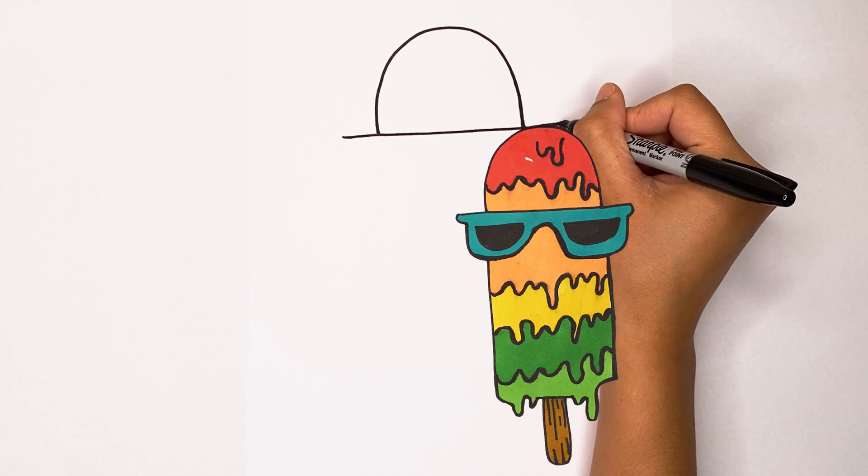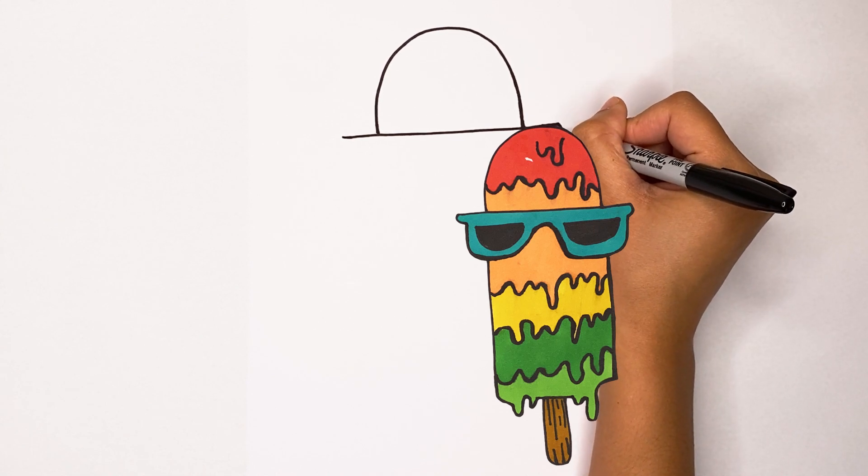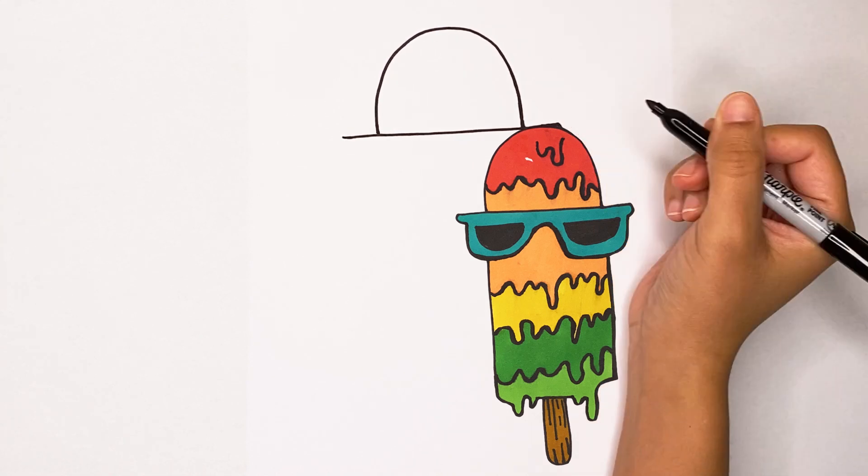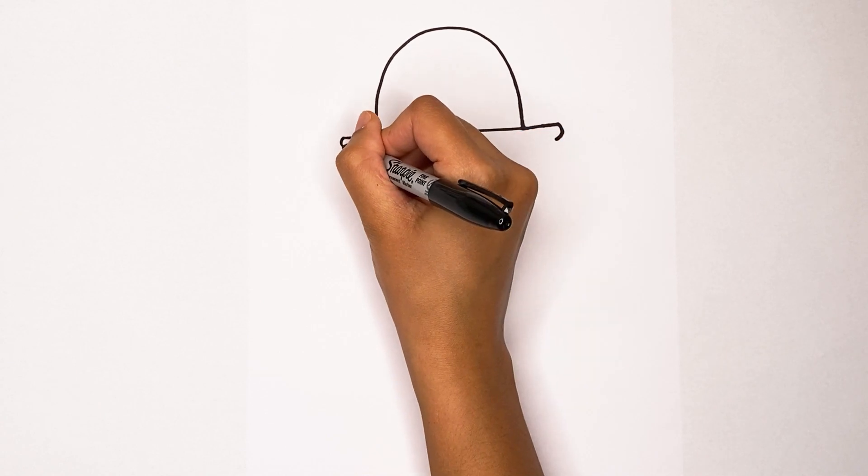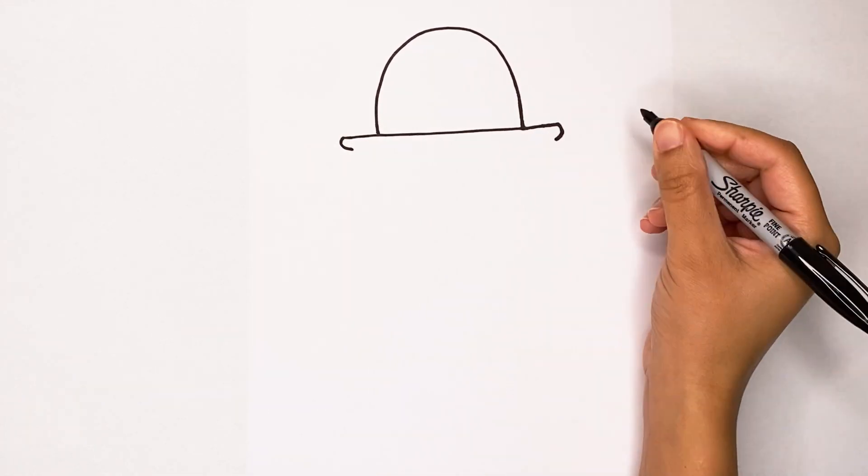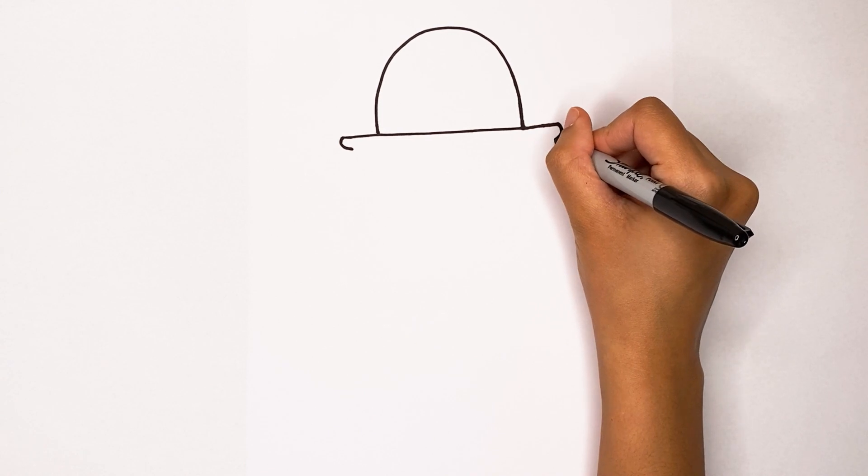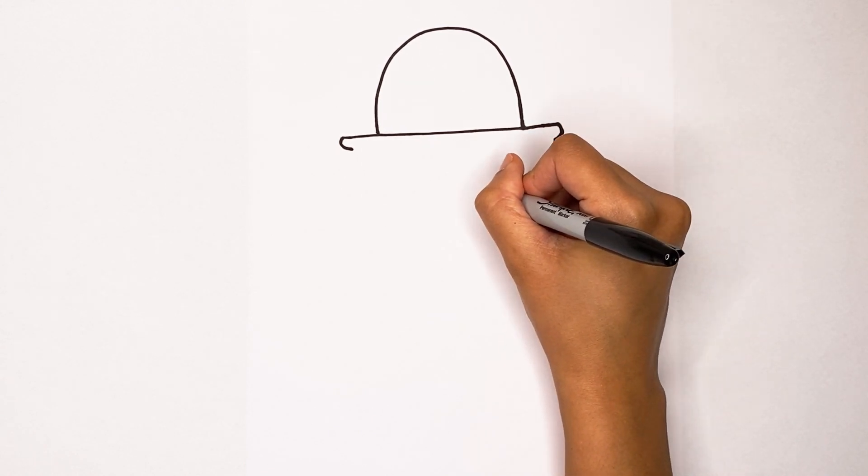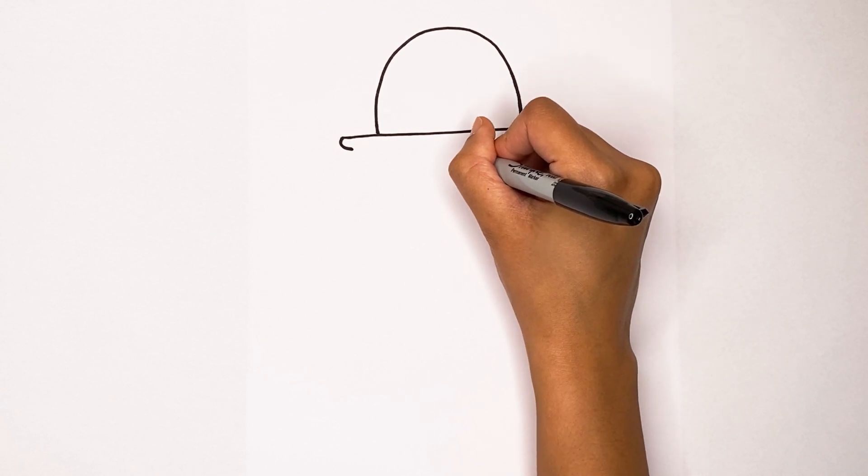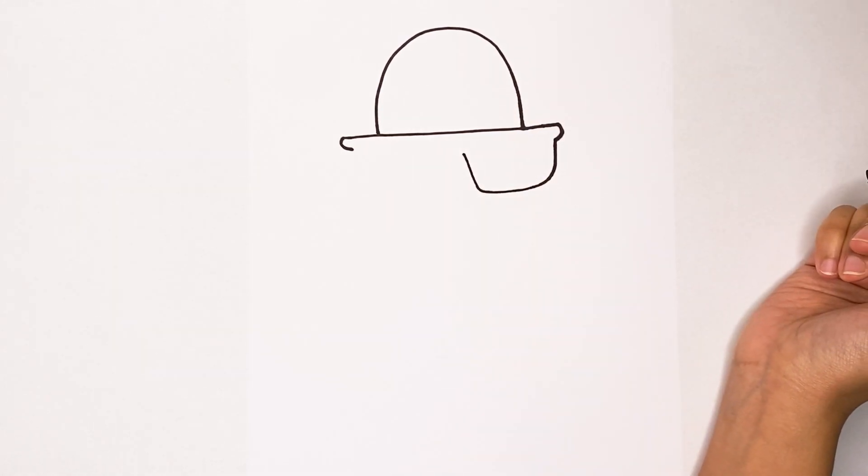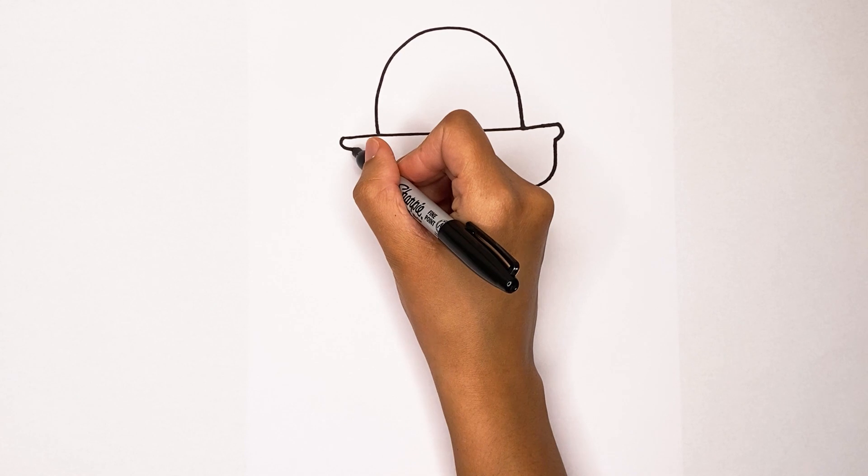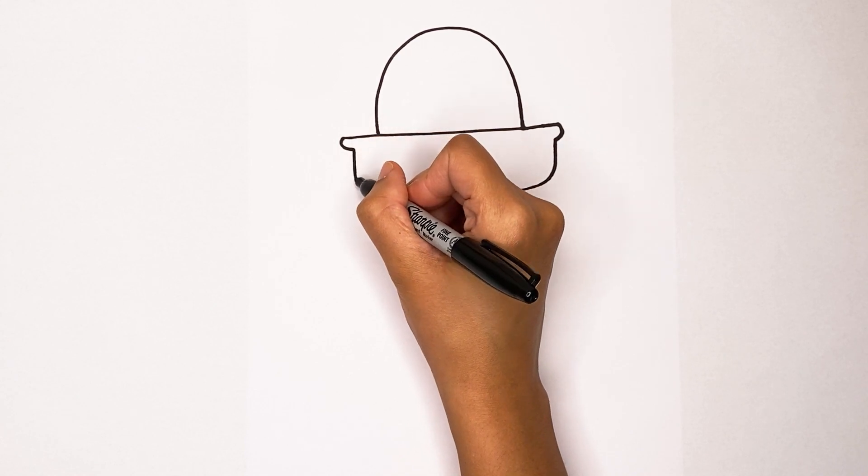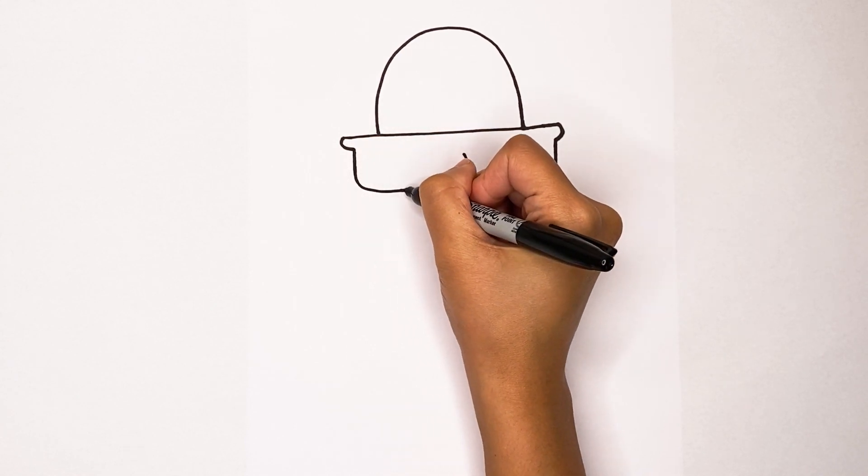Once you've done that, draw a line that goes in another curve like that on the other side. Now I'm going to draw a big curve that goes around and up like this. Same thing on the other side, draw a big curve that goes around and then up.